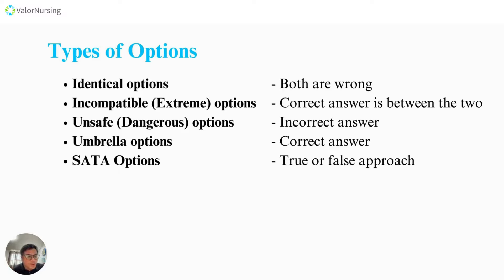When you see identical options in your exam, automatically remember that both are wrong — your BON examiner is placing synonyms in the options, two options that look different but have the same meaning. Second, incompatible or extreme options — when these appear, the correct answer is found among those two opposing options. They are on opposite ends, and either of the two holds the correct answer.